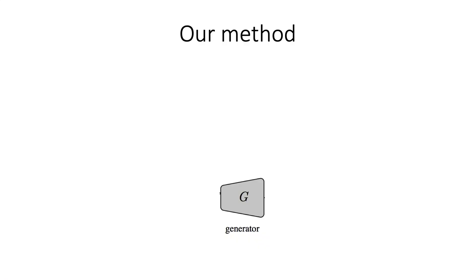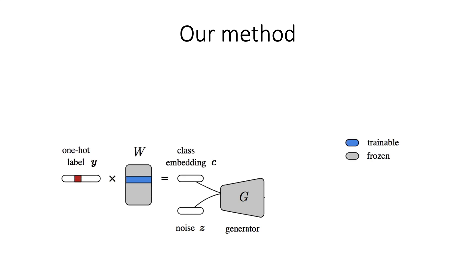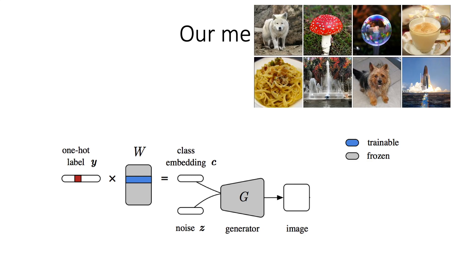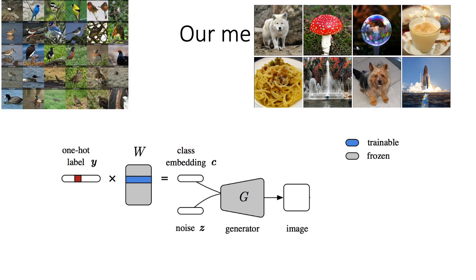Our method is simple. First, a class conditional generator typically takes as input a random noise vector and a one-hot vector that is transformed into a real-valued class embedding after the embedding matrix. We know that the generator is already capable of synthesizing photorealistic images for many classes, and the class embeddings learned during GAN training appear to be semantically meaningful — that is, similar classes like birds appear nearby.